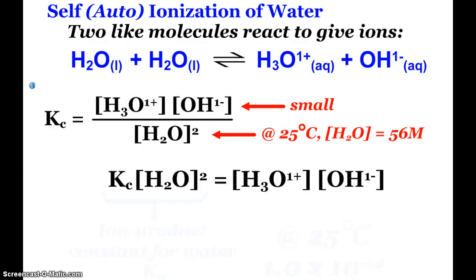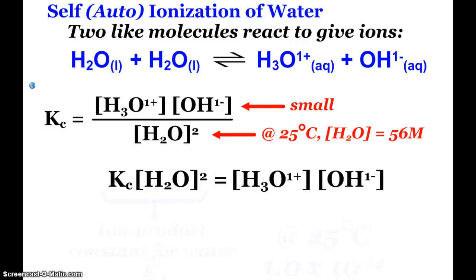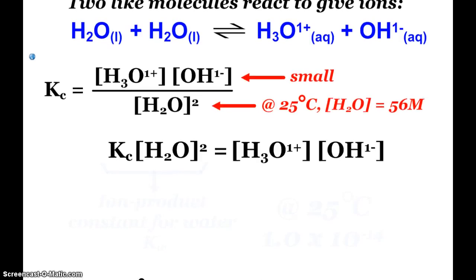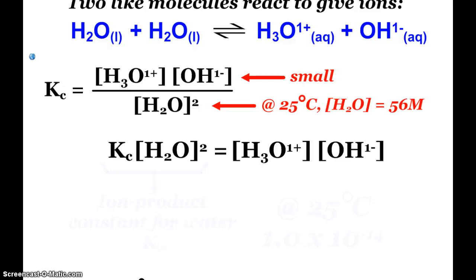So looking at our Kc expression for this reaction, we see that our products are the hydronium and hydroxide ion concentrations on the top and then the concentration of water squared. So at the top, again, very, very small amount of hydronium and hydroxide. And at 25 degrees Celsius, the concentration of water is 56 molar. If I rearrange that equation, I can end up with this expression. Kc times the concentration of water squared equals hydronium times hydroxide concentration.